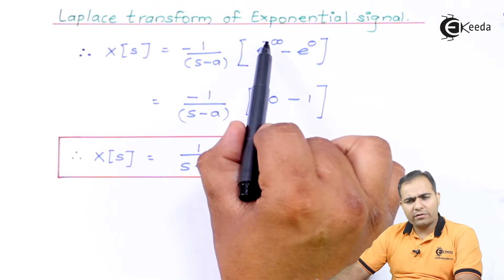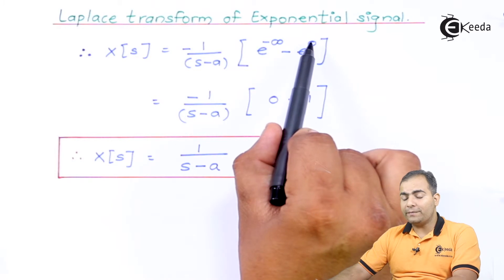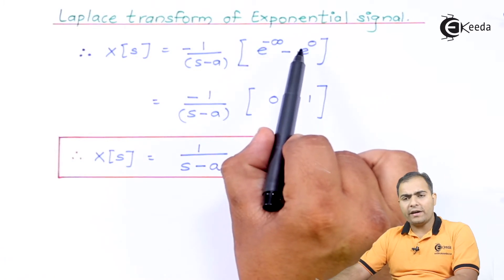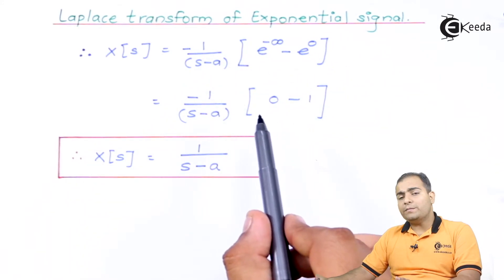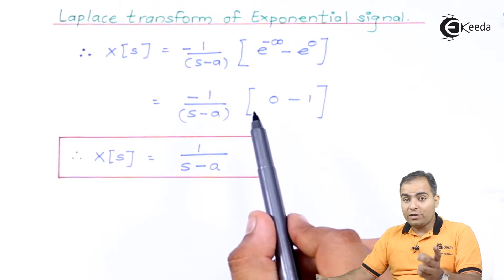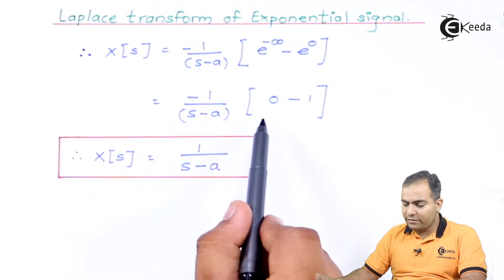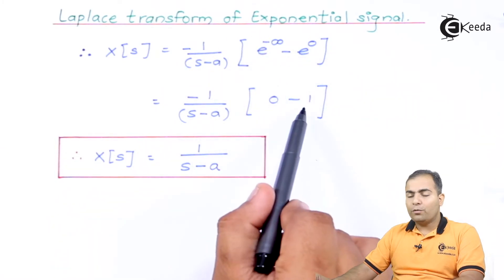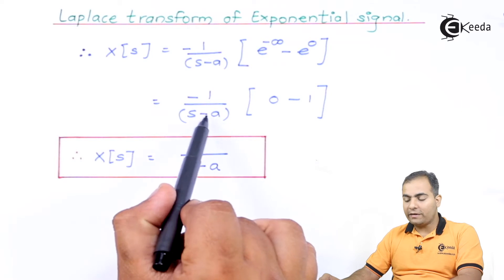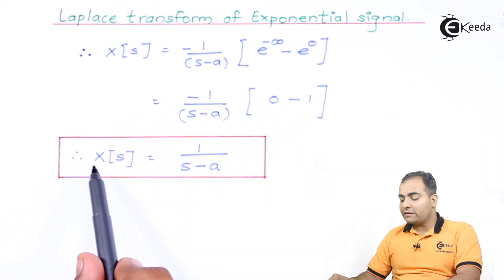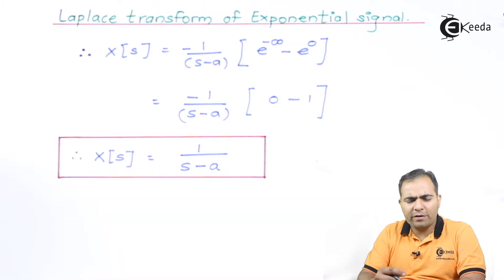Substituting the upper limit, t goes to infinity, so the power becomes minus infinity. Since e to the power minus infinity is always zero, and e to the power zero is always one, substituting the lower limit gives one. The minus signs cancel, giving X(s) = 1/(s − a). You can also prove this using the frequency shifting property.